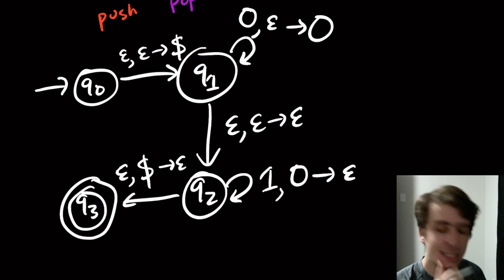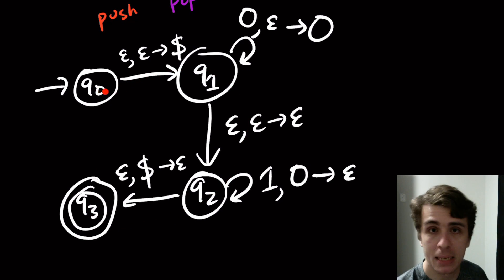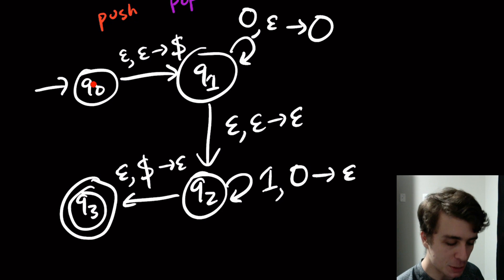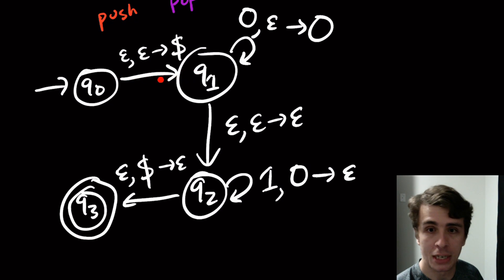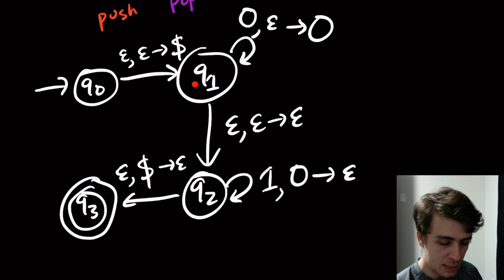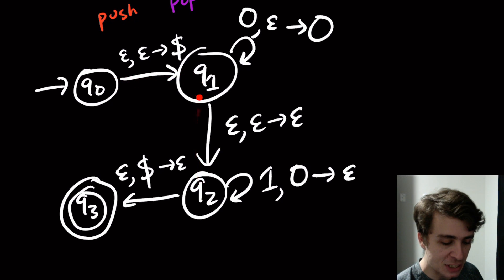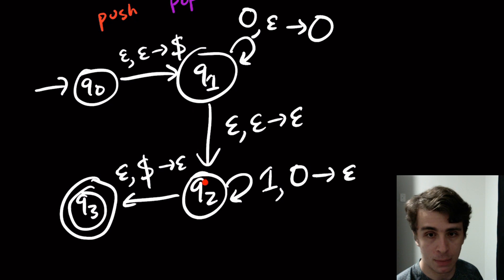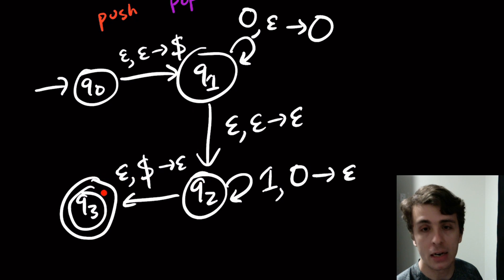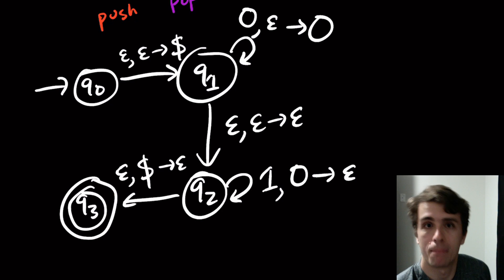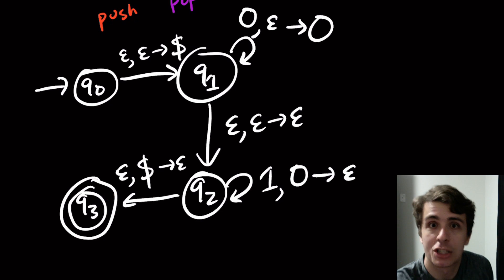Does this machine accept the empty string? Yes: we take the first epsilon transition, pushing the dollar sign onto the stack. The stack is unchanged through the q1 epsilon loop, then we take the transition that pops the dollar sign — it's on the stack so we're allowed to take it — and we accept.